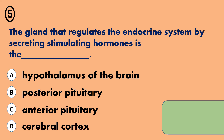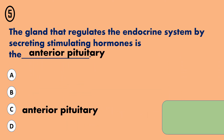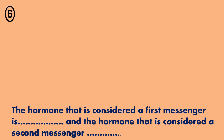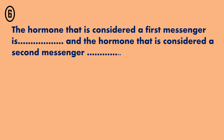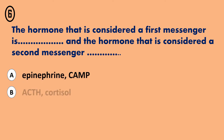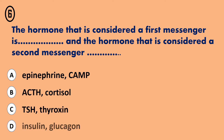The correct answer is... Question 6. A - Epinephrine, cAMP. B - ACTH, cortisol. C - TSH, thyroxine. D - Insulin, glucagon.